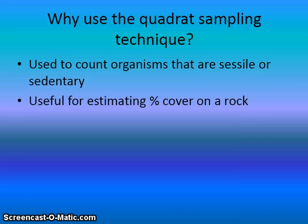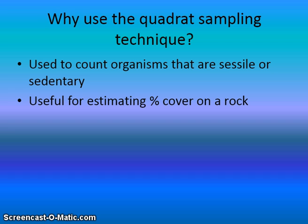The main purpose of your quadrat is to be able to count organisms. This is very useful when you're working in an ecosystem and you want to know something about that ecosystem, either something about the food chain or a food web or the health of the ecosystem.